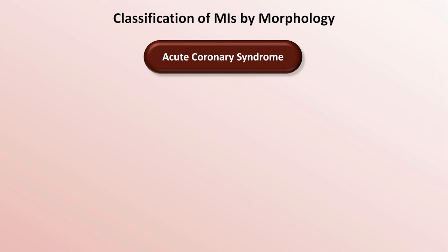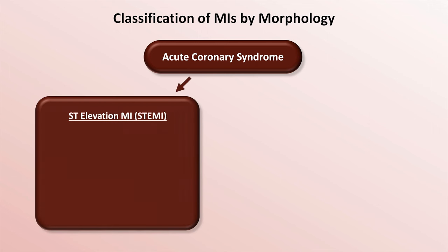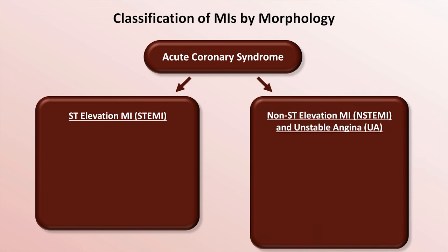Clinically, the most important classification to understand is STEMI vs. N-STEMI. Acute coronary syndrome is an umbrella term to describe a collection of related pathophysiology characterized by supply-demand mismatch of oxygen to myocardial tissue, typically from a focal obstruction in a coronary vessel. Acute coronary syndrome is divided into one category for ST-elevation MIs and one category for both non-ST-elevation MIs and unstable angina.